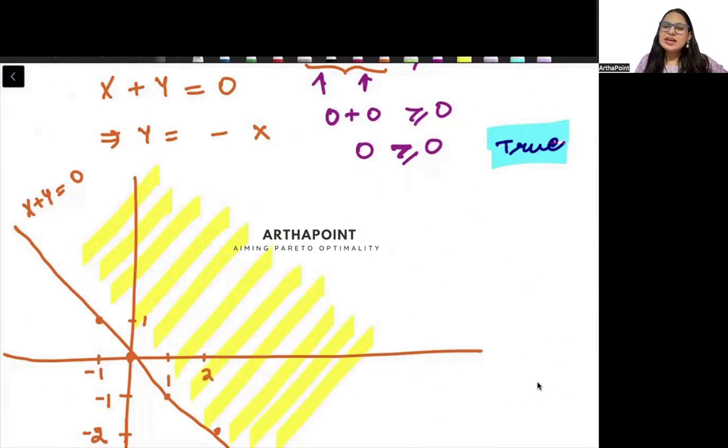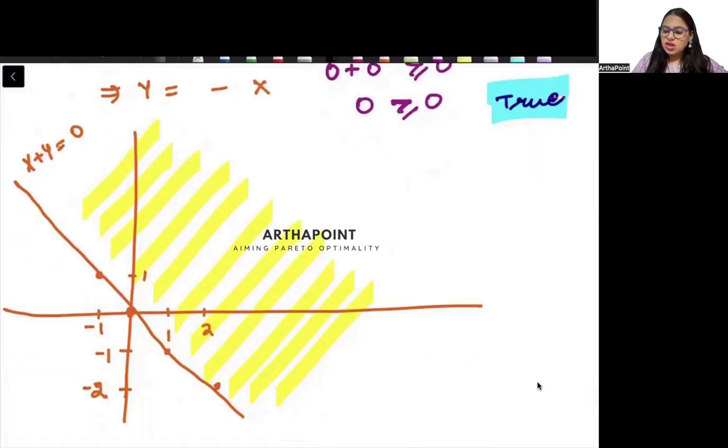If you don't understand it this way, you need to just think about x plus y greater than 0. Take any one coordinate and check. Check one here and one there. Here x value is 1 and y value is also 1. So x plus y is 2.